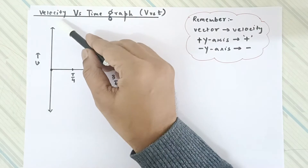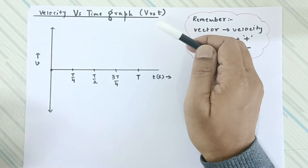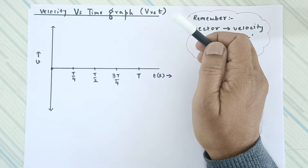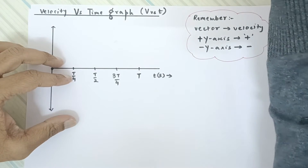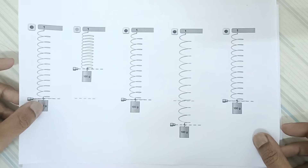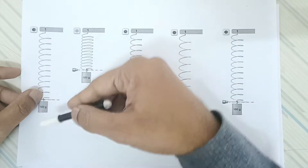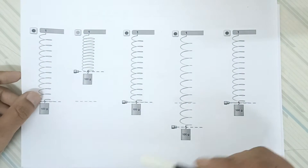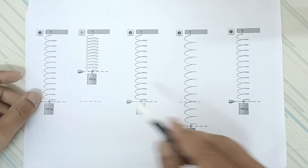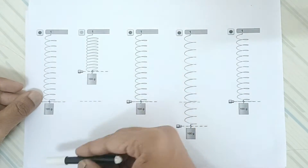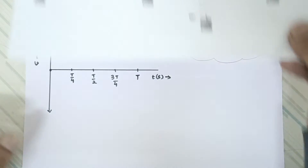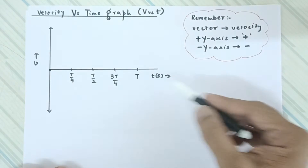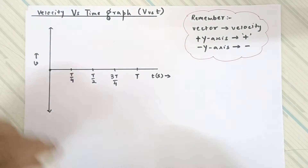In this video we are going to talk about the velocity-time graph of a simple harmonic oscillator oscillating in the y-axis. Just before we go ahead, please go through the video of the displacement-time graph of the simple harmonic oscillator — the link is given in the description. Here the same situation: the simple harmonic oscillator is oscillating, and with respect to that we are going to plot the velocity-time graph.